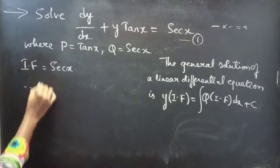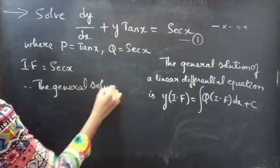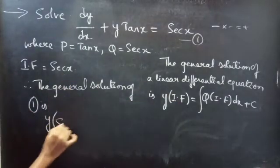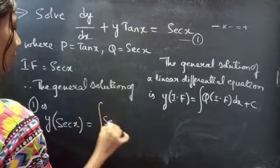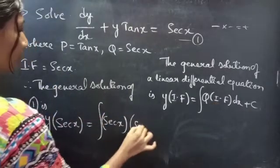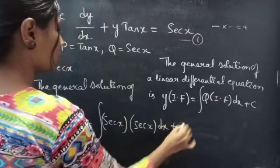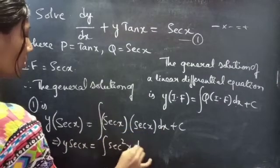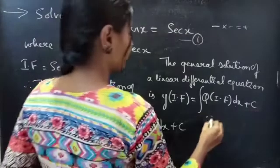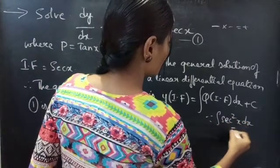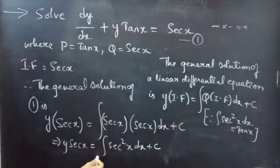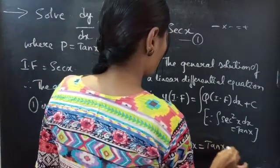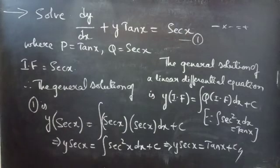Therefore, the general solution of equation 1 is: y·sec(x) = ∫sec(x)·sec(x) dx + C, which gives y·sec(x) = ∫sec²(x) dx + C. Since ∫sec²(x) dx = tan(x), we get y·sec(x) = tan(x) + C, which is the required general solution.